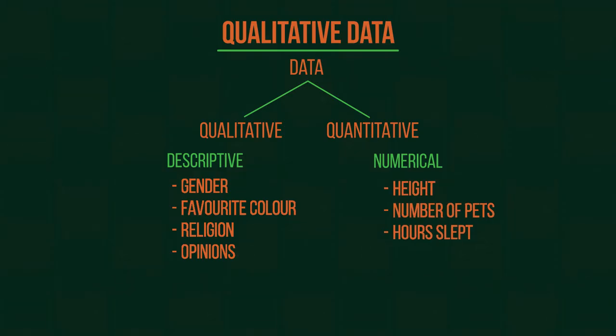Whereas, numerical things, so things that can be quantified or counted, they're quantitative data.